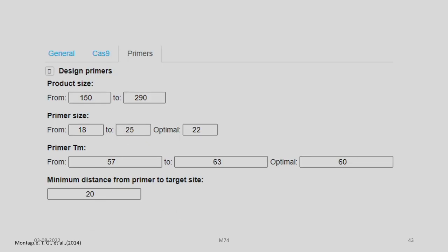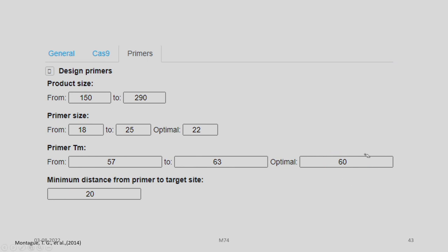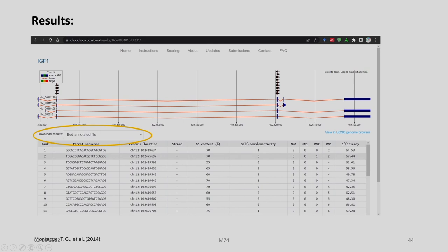Additional options include primer product size from 150 to 290 base pairs, primer size from 18 to 25 nucleotides with an optimal of 22, primer melting temperature range, and minimum distance from primer to target site. After setting all options, hovering over target sequences in the results provides further details.